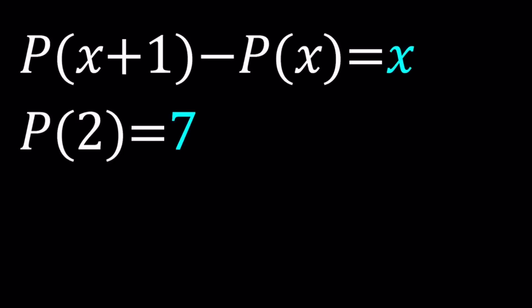Hello everyone. In this video we're going to be solving a nice polynomial equation. Even though the thumbnail doesn't indicate this is a polynomial, hopefully you understand from P of x that this should be a polynomial, and the title tells you that. So P of x plus 1 minus P of x equals x, and we know that P of 2 equals 7. What is the question? We're going to be solving for P of x, finding an expression for P of x.